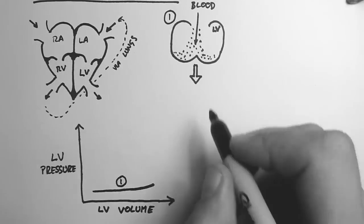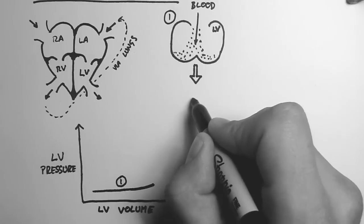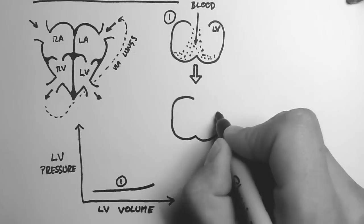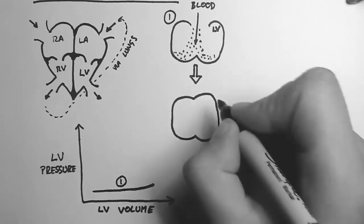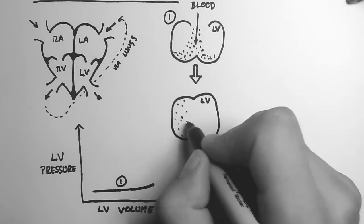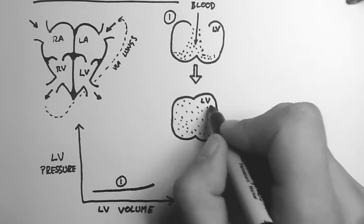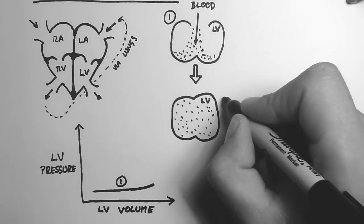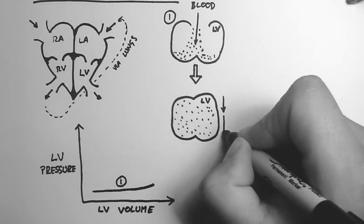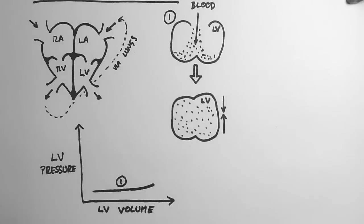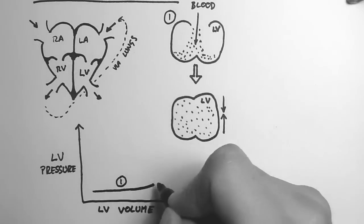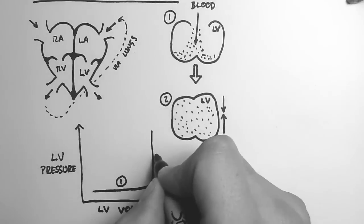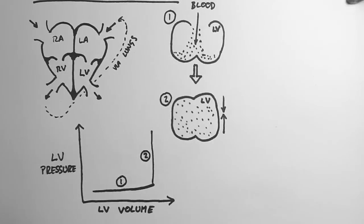The next step is a closure of the mitral valve. And so the left ventricle is full of blood here, but both valves are closed. Meanwhile, the left ventricle is contracting. So there's no change in volume because the blood can't get in or out, but the pressure goes up. And that's what I've shown on this graph here.